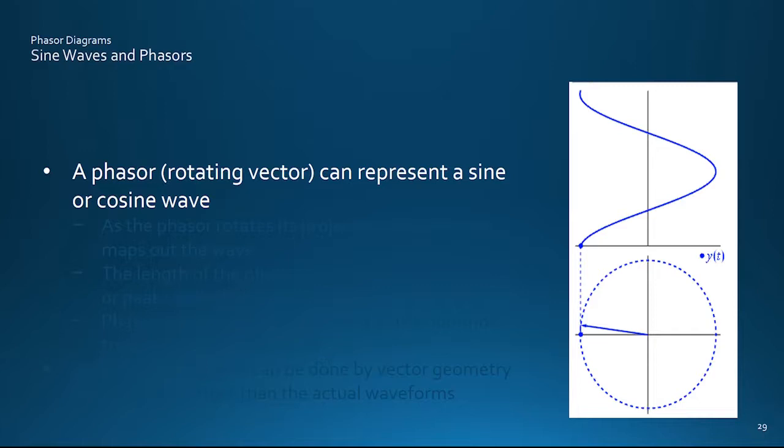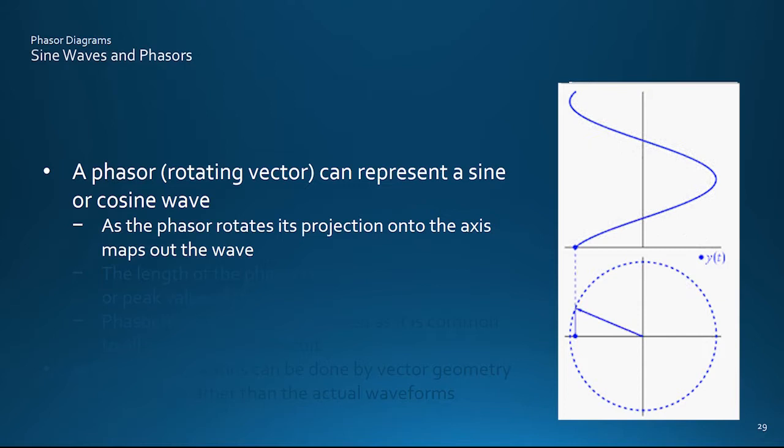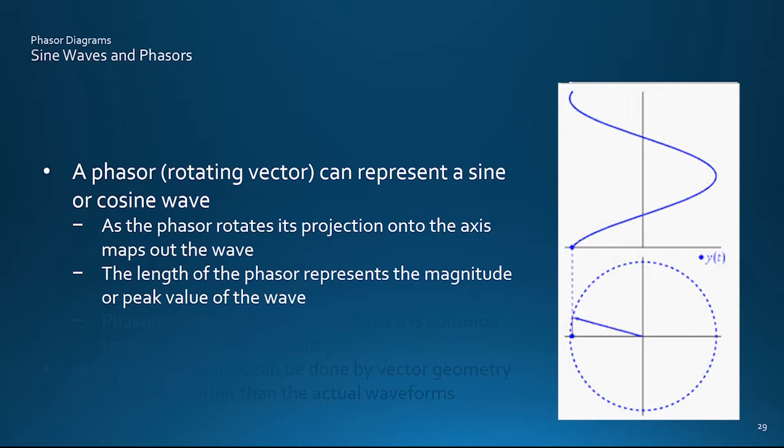Geometry provides this easier route. As it turns out, or rather around, that a rotating vector or phasor can be used to represent a sine or cosine wave. As a phasor rotates, its projection is shown here onto the axis above. This maps out a sine wave.